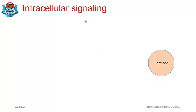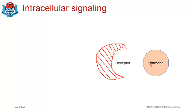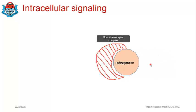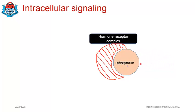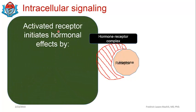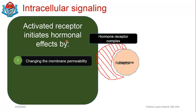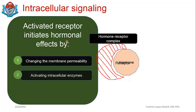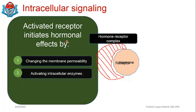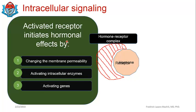Let's talk about intracellular signaling — what really happens inside the cell. We have a hormone and a receptor, and the hormone binds to the receptor to form a hormone-receptor complex. Once a hormone binds to a receptor, you have an activated receptor. This activated receptor will initiate hormonal effects by: one, changing the membrane permeability; two, activating intracellular enzymes; and three, activating genes.